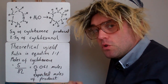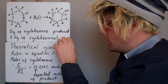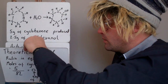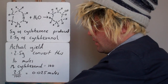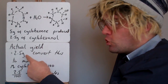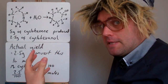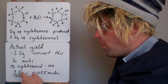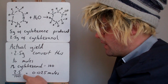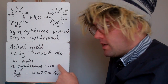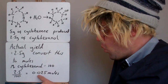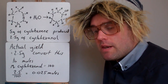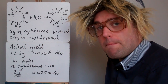Now let's look at how many moles were actually produced. The actual yield was 2.5 grams in mass. Let's convert that into moles so we can compare it with our theoretical yield. We do 2.5 divided by 100, as the molar mass of cyclohexanol is 100. That gives us 0.025 moles. You can see already that's a lot less than the expected 0.061 moles.